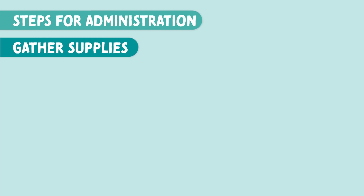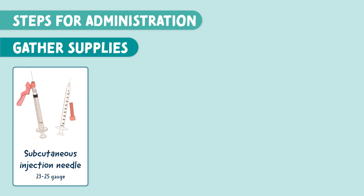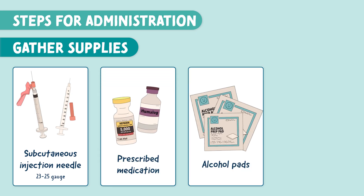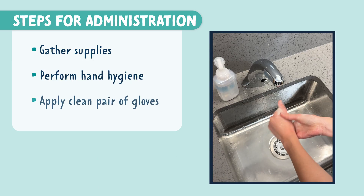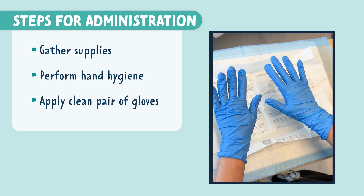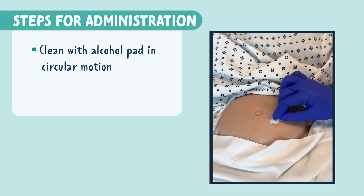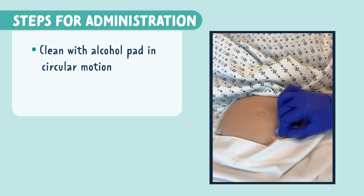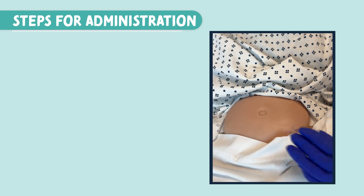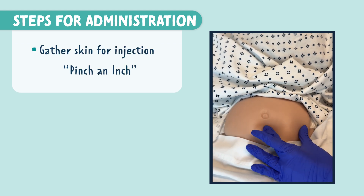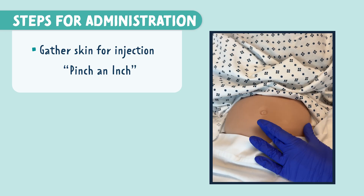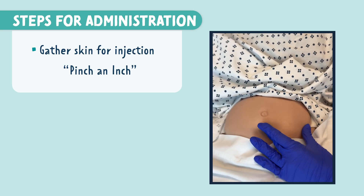Let's gather our supplies. We'll need a subcutaneous injection needle, typically a 23 to 25 gauge needle, the ordered medication, alcohol pads, and clean gloves. Then perform hand hygiene and put on your clean pair of gloves. Clean the area thoroughly with an alcohol pad in a circular motion from the inside out. Then pinch the skin — remember this by thinking 'pinch an inch,' or pinch enough skin for the needle to safely enter the subcutaneous tissue.